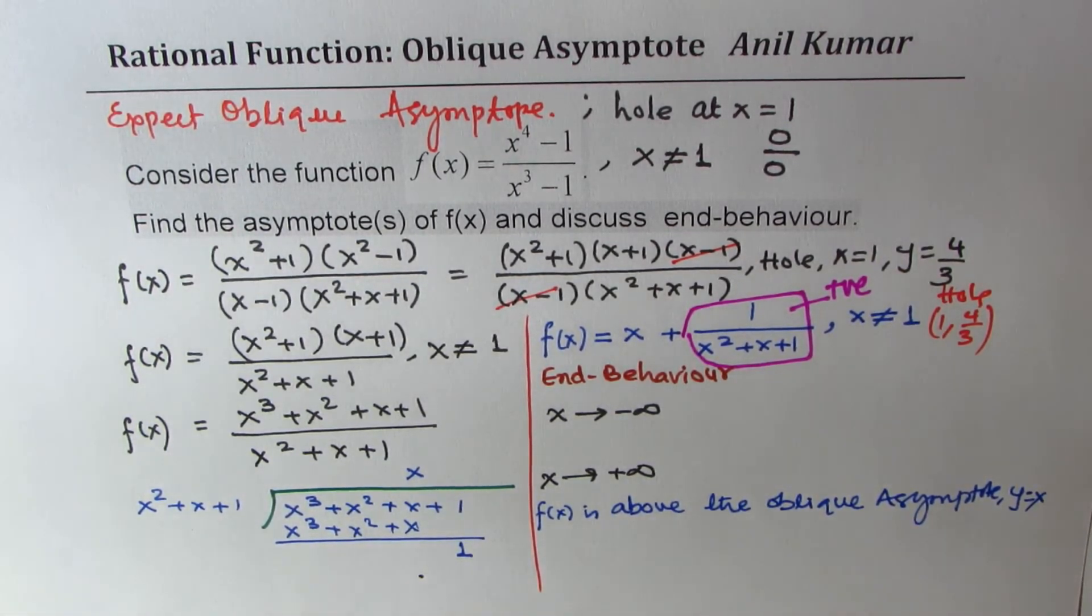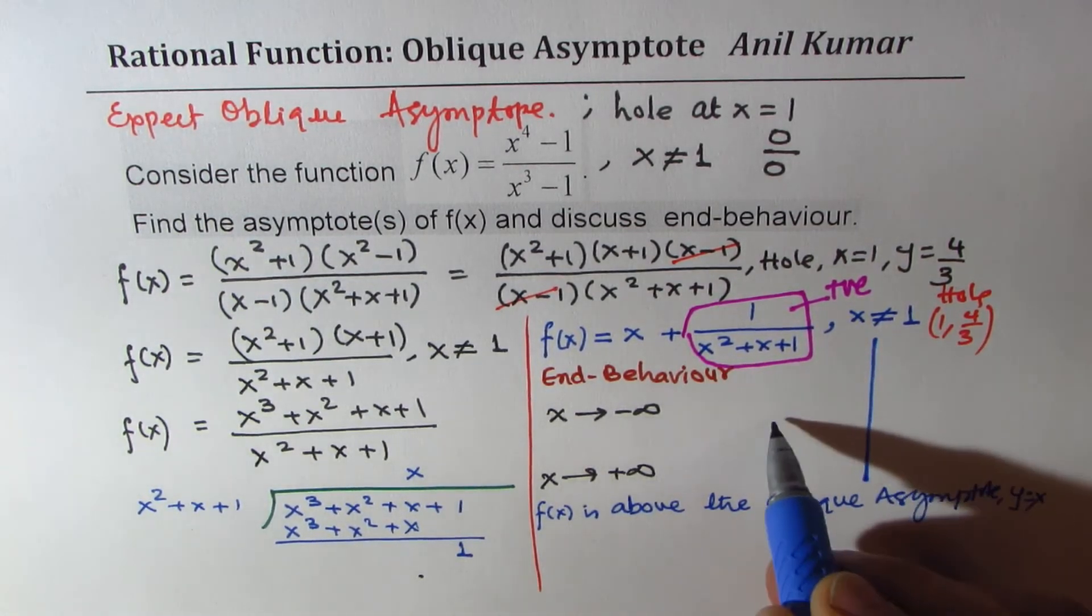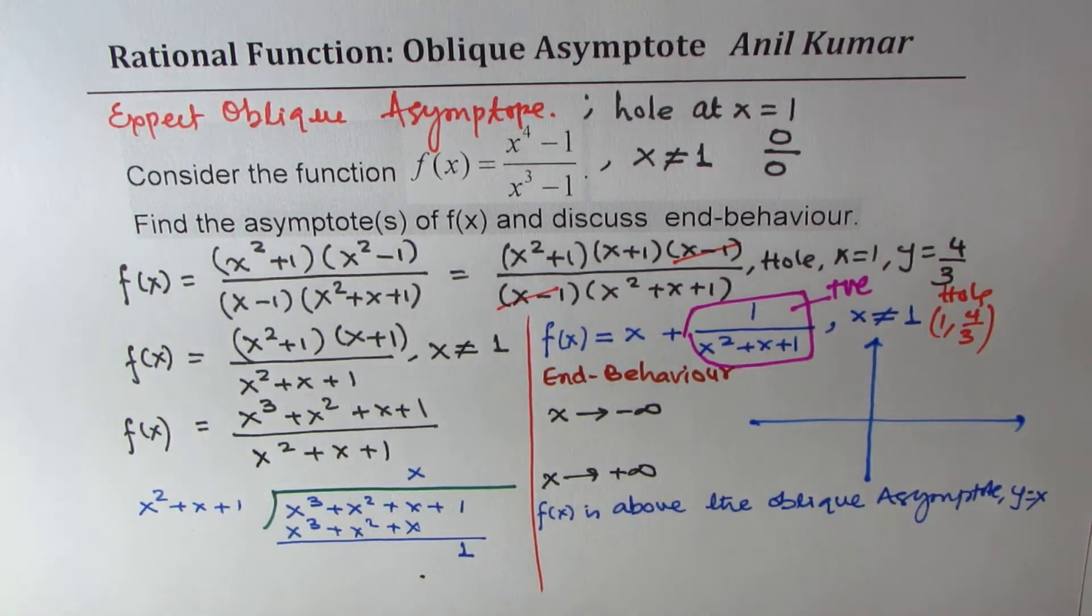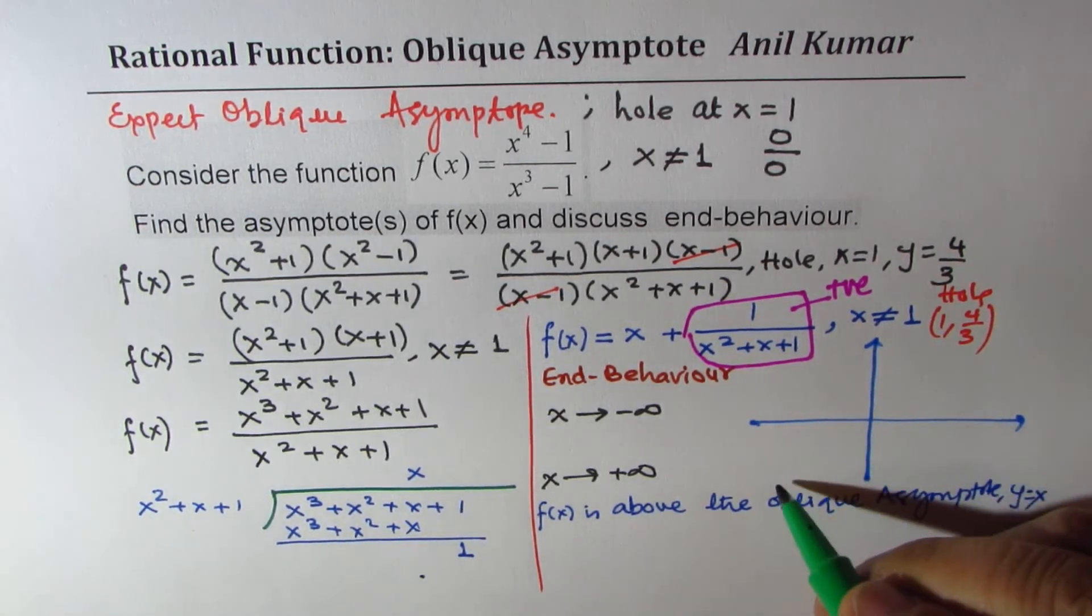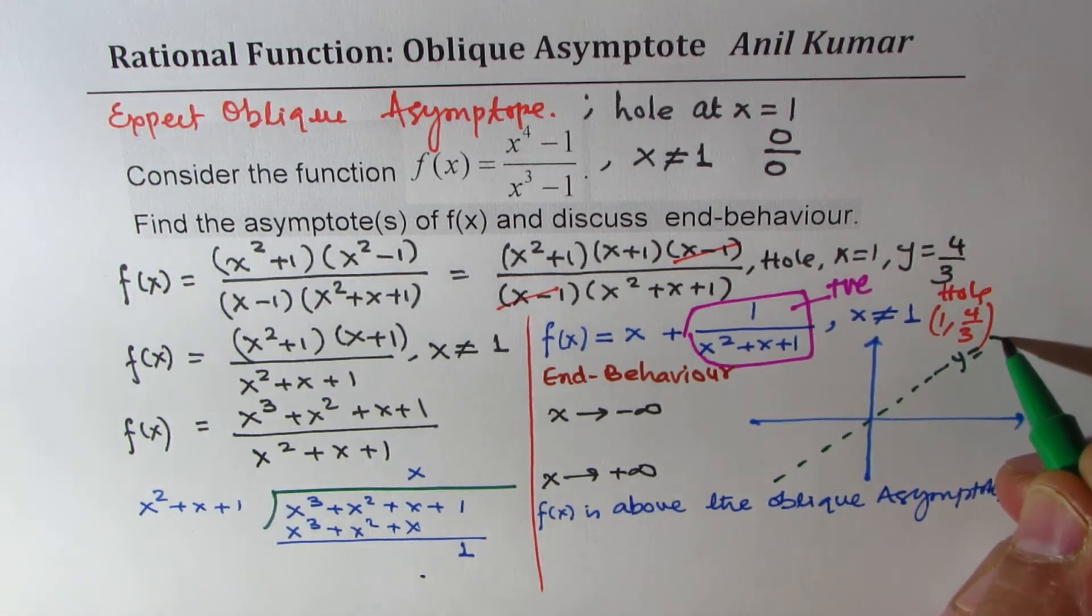So to sketch, let me give a small sketch here in the remaining space. So the graph will look not exactly, but something like this. So we have an oblique asymptote here, which is y equals x.